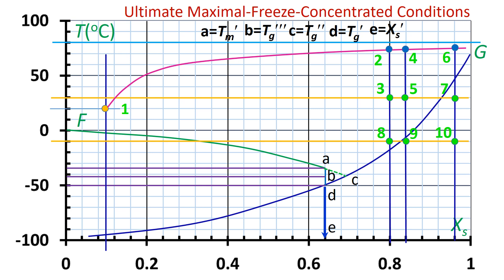Now we can see that point 0.8 is in the rubbery region, point 0.9 is just below glass transition, and point 0.10 is much below glass transition. Therefore, points 0.9 and 0.10 will be stable. In addition, dried apple at point 0.10 would be most stable since it is much below the glass transition line.